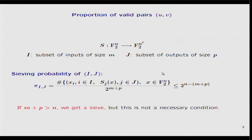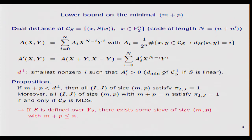We can also get a sieve if the number of known inputs M plus P is less than or equal to M. More precisely, we are able to give a lower bound on the minimum number of bits we have to know in order to get a sieve.